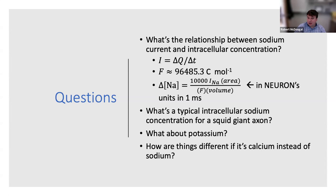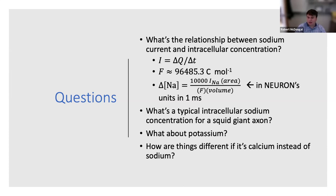We can use math to identify the relationship between the sodium current and changes in intracellular concentration. Typical sodium concentration in a squid giant axon might be around 10 millimolar; typical potassium is 54.5 millimolar. But calcium is a whole different beast — instead of 10 millimolar, calcium concentration is typically on the order of 100 nanomolar, many orders of magnitude smaller. So a meaningful calcium current can produce visible calcium concentration changes fairly quickly.